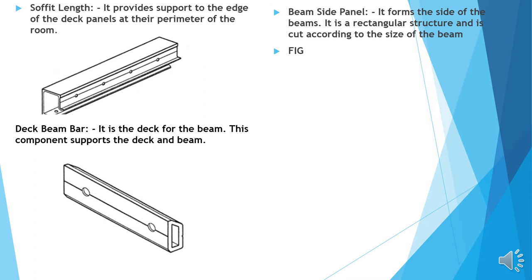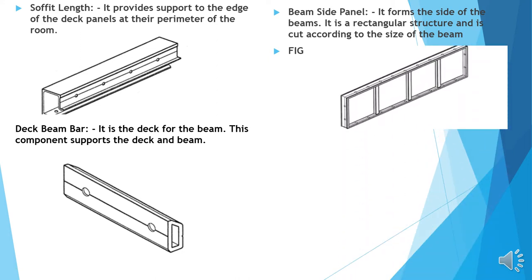Beam side panel: It forms the sides of the beams. It is rectangular structure and it is cut according to the size of the beam. Here you can see the image of the beam side panel.